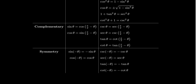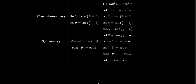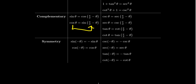The co-function theorem gives us the complementary identities. Sine and cosine are complements: sin θ = cos(π/2 − θ), where θ and π/2 − θ are complementary angles. This means sin 30° = cos 60°, for instance. Likewise, cosine of 70° equals sine of 20°. We can also derive that cosecant and secant are complementary functions, and tangent and cotangent are complementary functions. The 'co' in cosine, cosecant, and cotangent is short for 'complementary.'